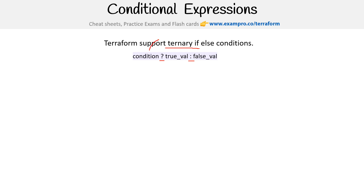It's called ternary because there are three things: one, two, and three. That's the way to remember it. It's not a preferred way of doing if-else statements in other languages because it is a little condensed, but it makes sense when you're using a scripting language and you're really restricted on per-line actions.